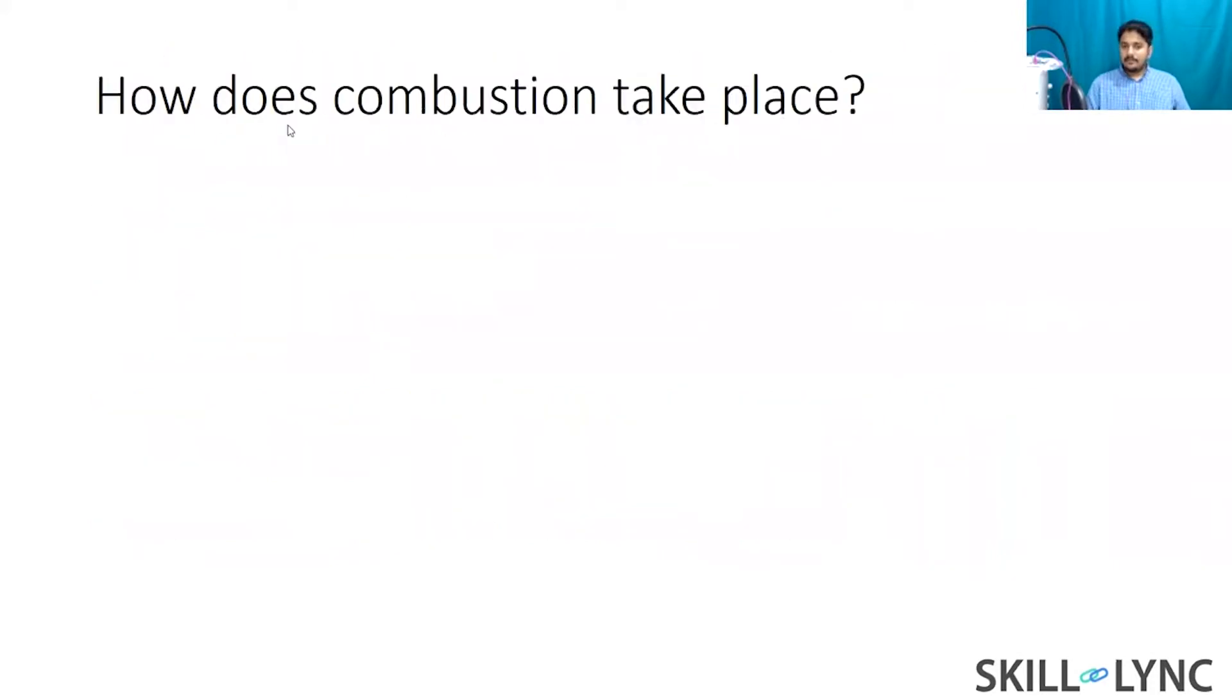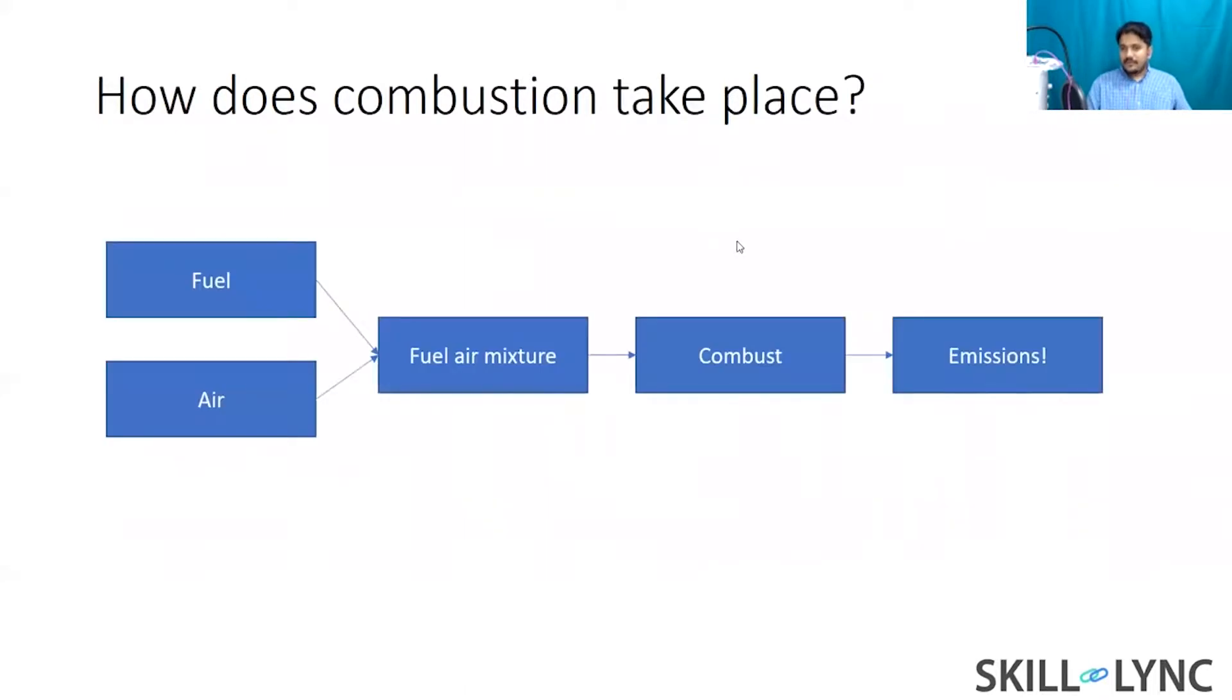All right, so let's talk about how combustion takes place. Most of you have this particular five block view. I call this a five block view because there are five components to it. So typically for combustion to take place successfully in your car or in your bike, you have these five elements that are interplaying with each other.